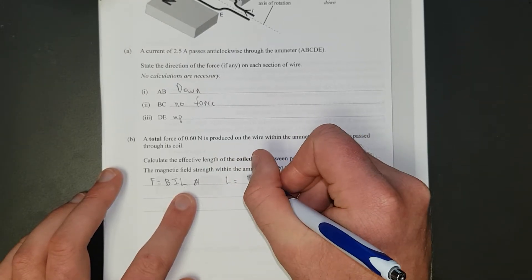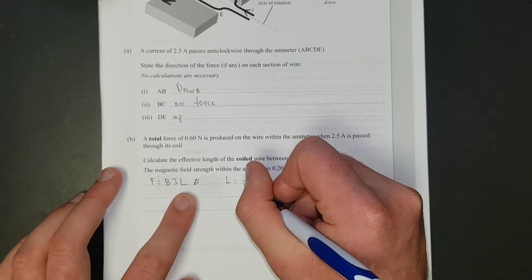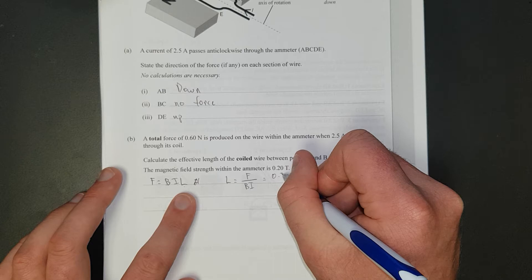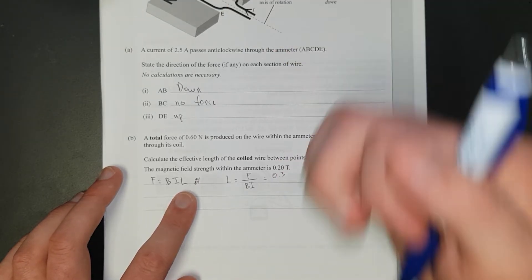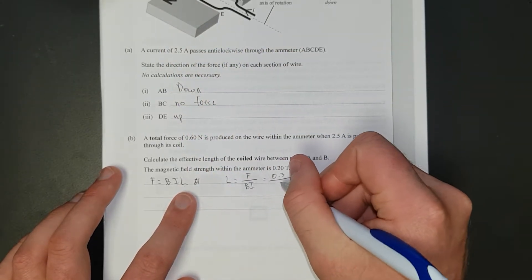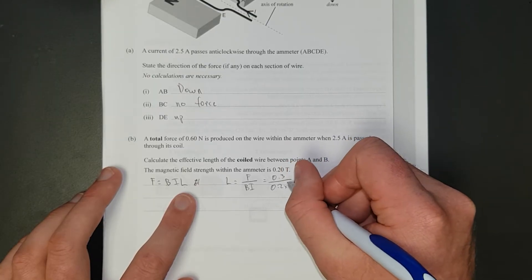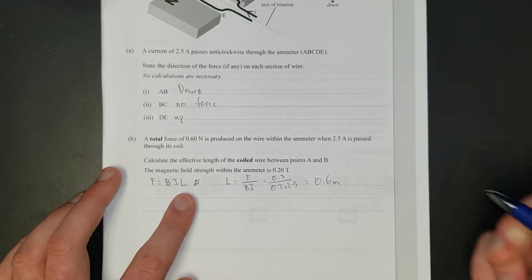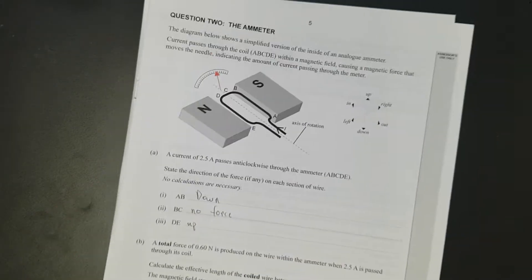In other words, the length is equal to the force divided by the magnetic field times the current, which is going to be 0.3, because we're just going to look at one wire from A to B. So, that's got half the force. The other half of the force is D to E. Divide it by 0.2 tesla times current's 2.5, and that is going to give me 0.6 meters. There we go, because that's 2 significant figures.